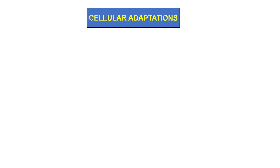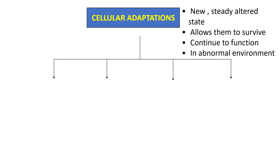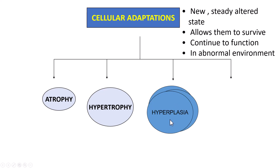What are these cellular adaptations? This is a new state for that given cell which is exposed to stress, and this new state allows them to survive and continue to function in this abnormal environment — that is called cellular adaptation. There are four important types of adaptations: one is atrophy, two is hypertrophy, three is hyperplasia, and the last one is metaplasia. If you look at this illustration, I have tried to illustrate these in different sizes and colors, which you will understand once I talk about all these cellular adaptations.